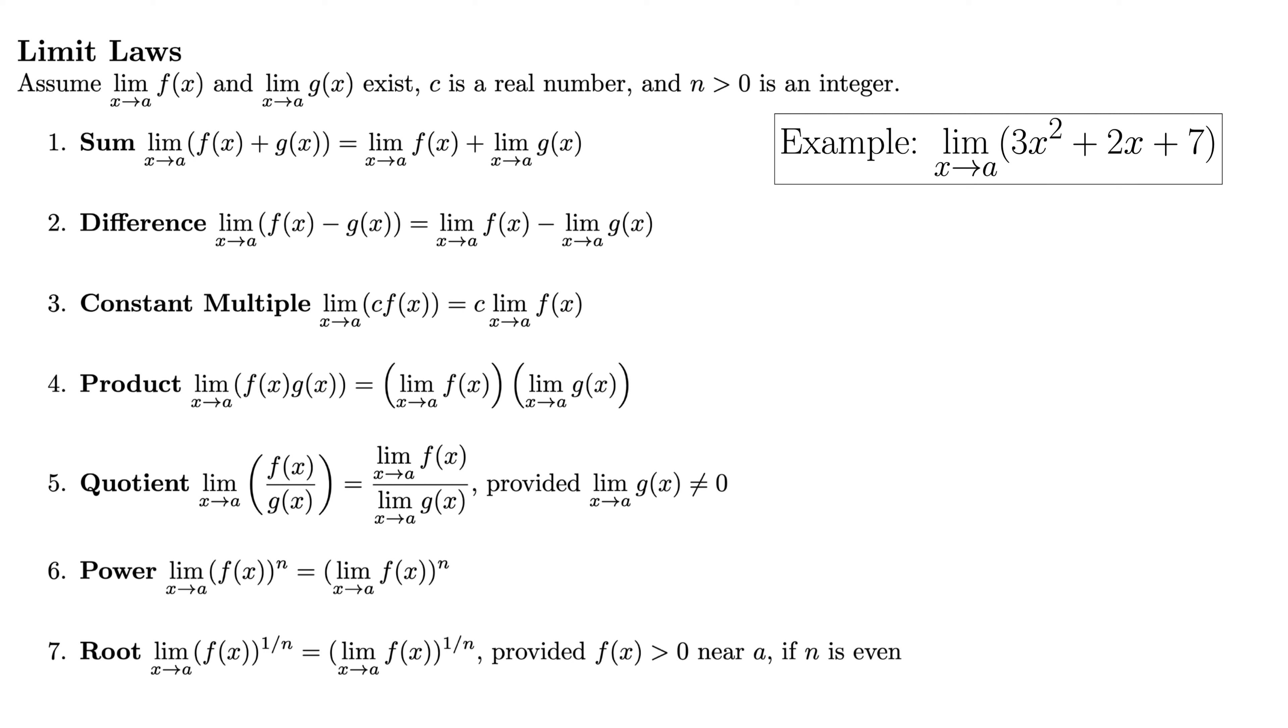So here's an example. We have the limit as x goes to a of the quantity 3x² + 2x + 7. So I see a sum of a few different things here. So let's use number 1, the sum limit law, to break this up a little bit. So we'll say by number 1, we then have the limit as x goes to a of 3x² plus the limit as x goes to a of 2x plus the limit as x goes to a of 7.